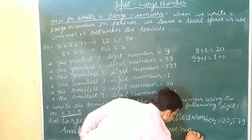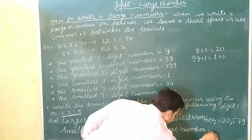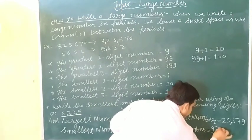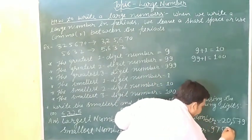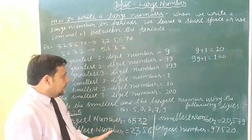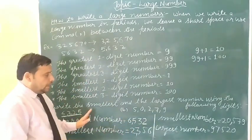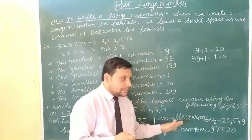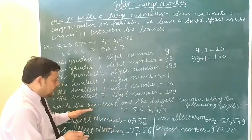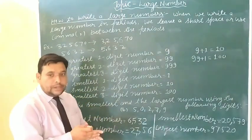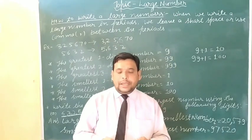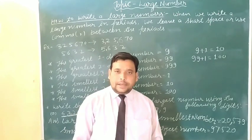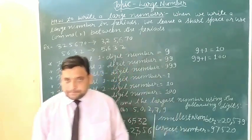Largest number — iska opposite karo: sabse pehle largest digit 9, 7, 5, 2, 0. Write the smallest and the largest number using the following digits — given digits mein only one digit ka use karke smallest aur largest number create karna hai.